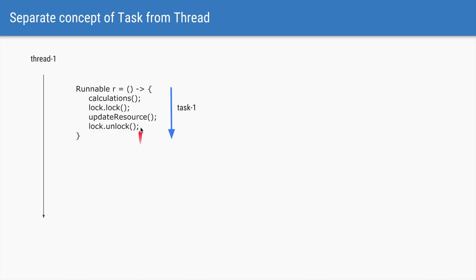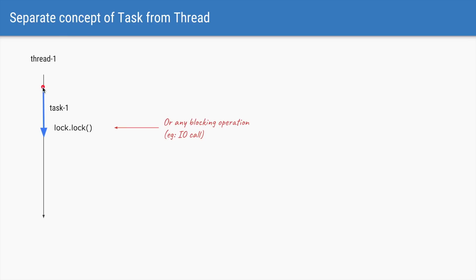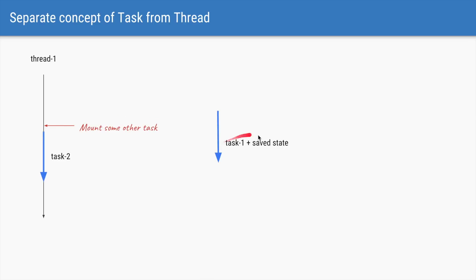Here we have a runnable with four operations: it does some calculations, acquires a lock, updates a resource, and unlocks. Similar to an executor service, we can submit this task to be run. The task is mounted and started by a particular thread. When the task reaches a lock.lock operation or any I/O or database operation (a blocking operation), the task is unmounted from the thread — so instead of the thread blocking, the task is taken out of the thread.